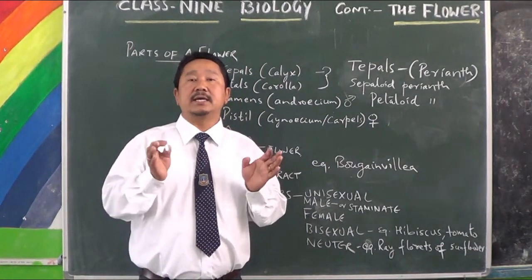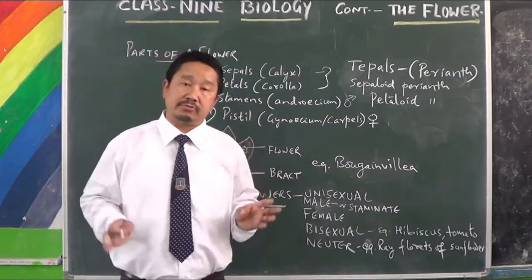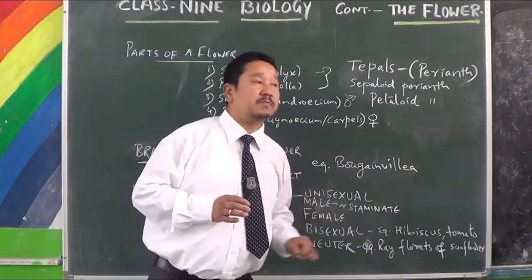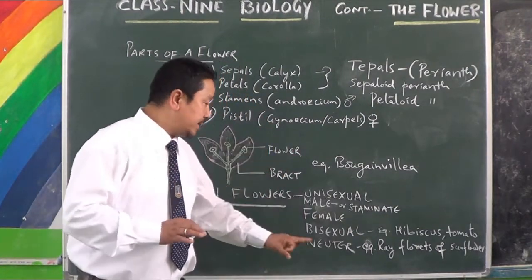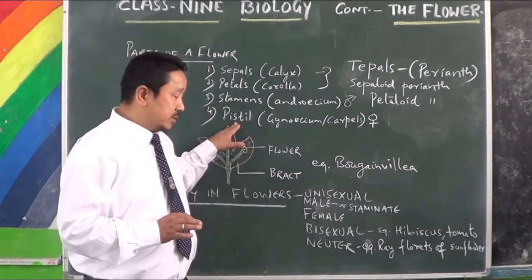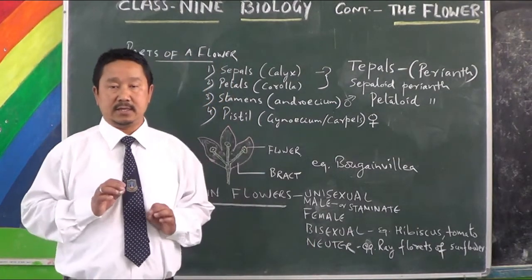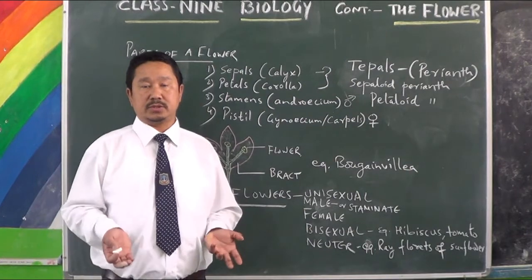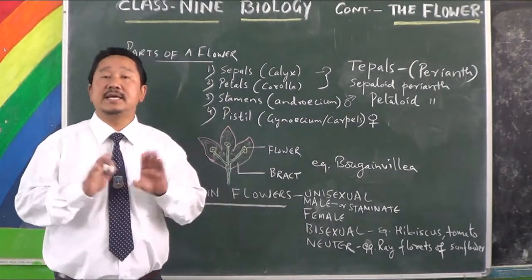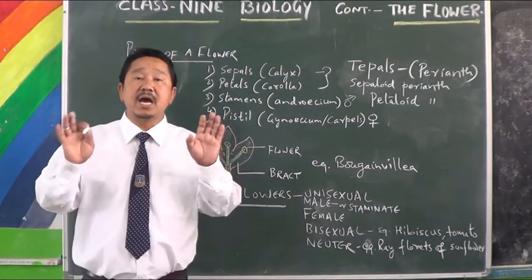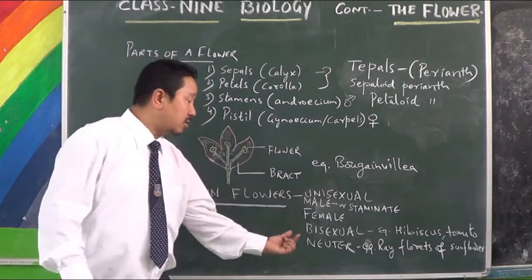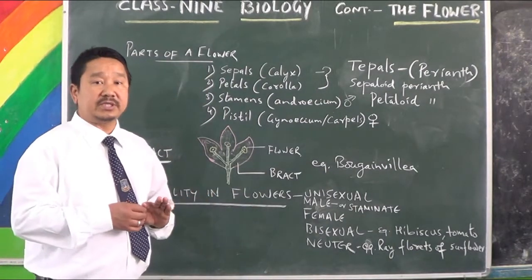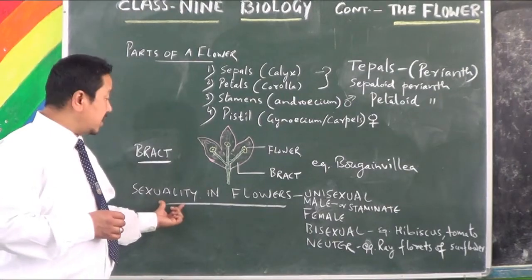In some cases, both male and female parts are lacking. Like in the ray flowers of sunflower — you find pistils are present but they are sterile, meaning they don't function. Such flowers where both male and female parts are not present or functional are called neuter flowers. Please remember this term: N-E-U-T-E-R.